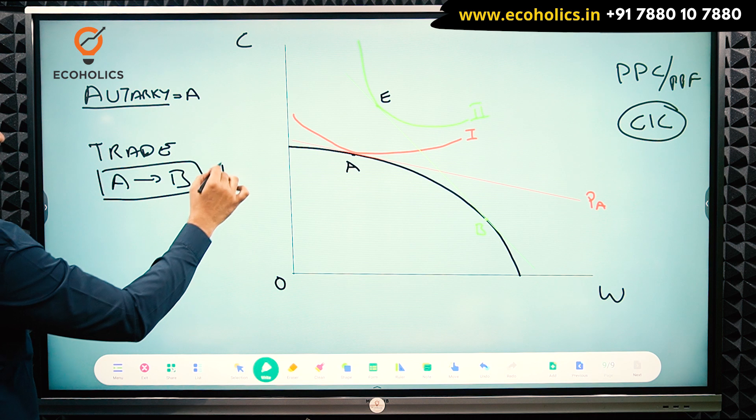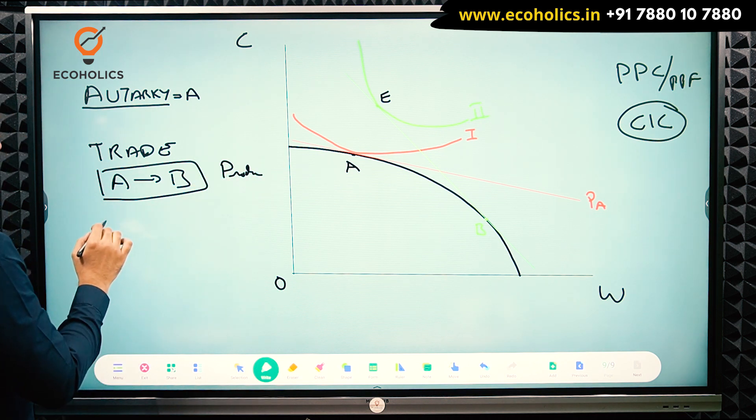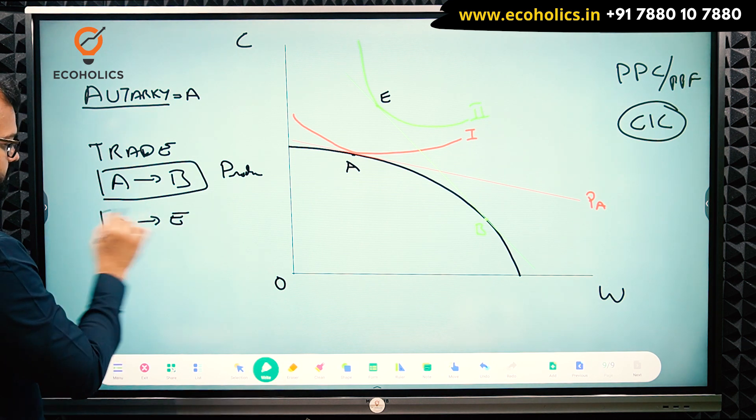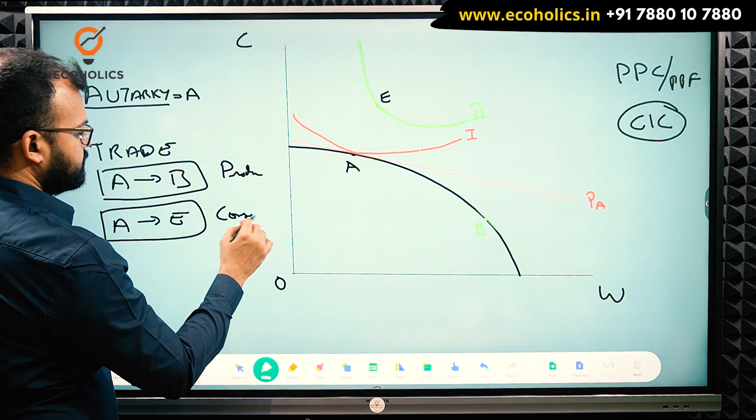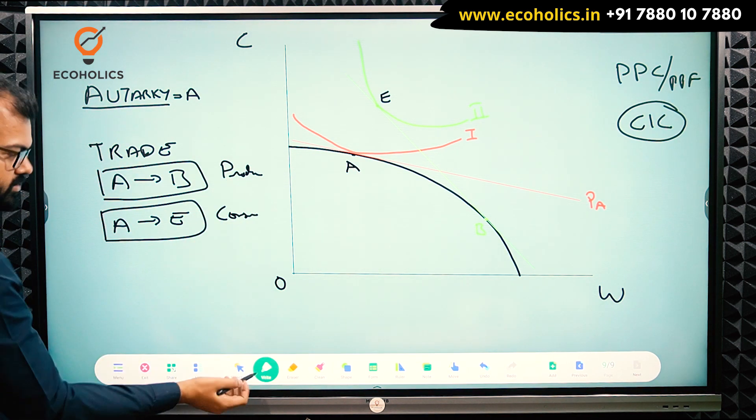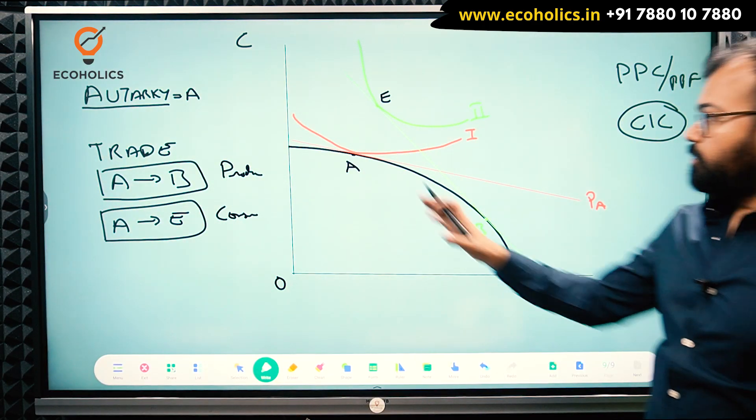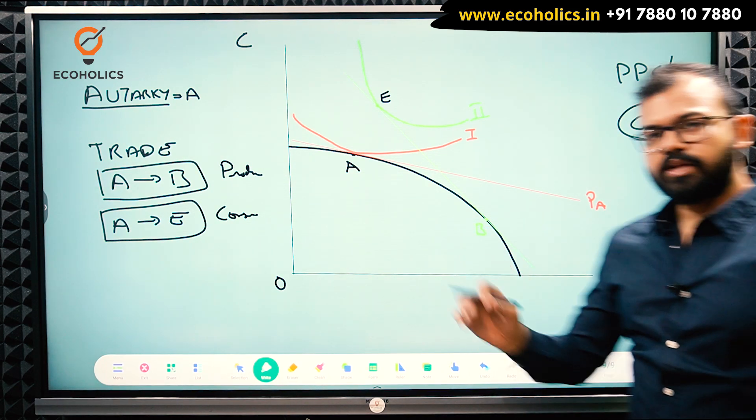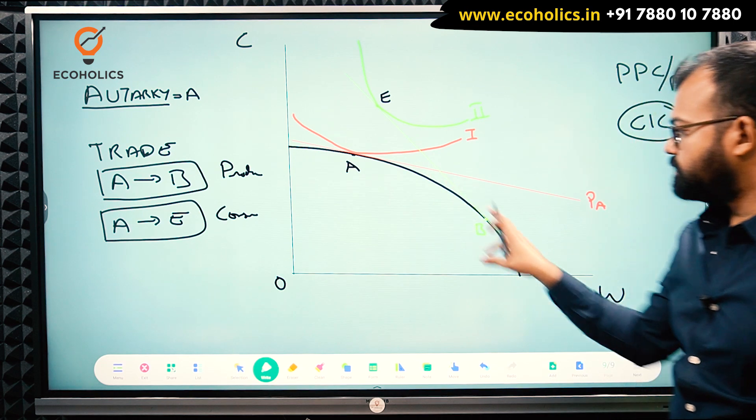So here I will write P or production. And India will move in consumption from A to E point. So A to E point, India will move in consumption. This is production, this is consumption. My handwriting is bad, so beg your pardon for this. I hope you can see this. Now can you tell me why production cannot go beyond this black PPC line? Answer is very simple.